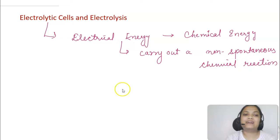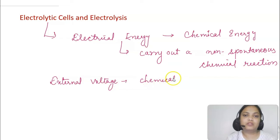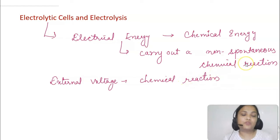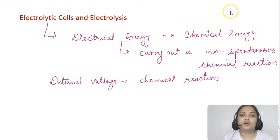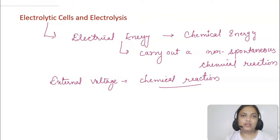In the case of an electrolytic cell, some external source of voltage is used to drive a chemical process or reaction. We attach an external source of voltage — it can be a cell or a battery — to carry out the chemical reaction. I will give you a brief general idea about how the electrolytic cell looks.